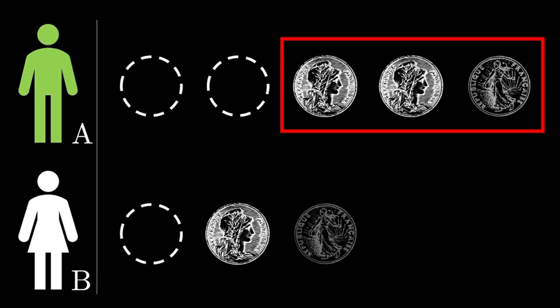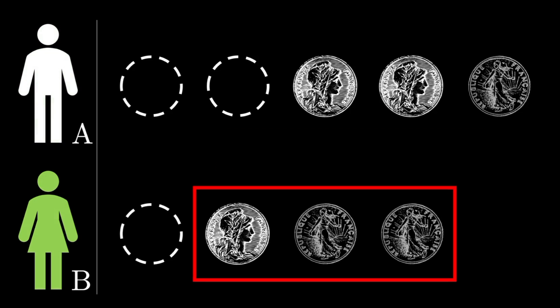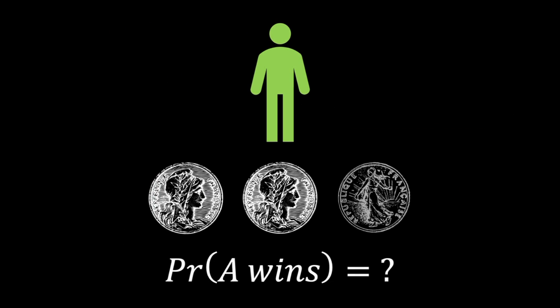If however it is hits, tails, tails, B wins the game. What then is the probability of A winning this game?